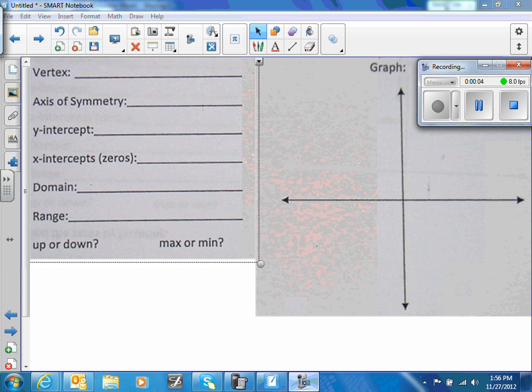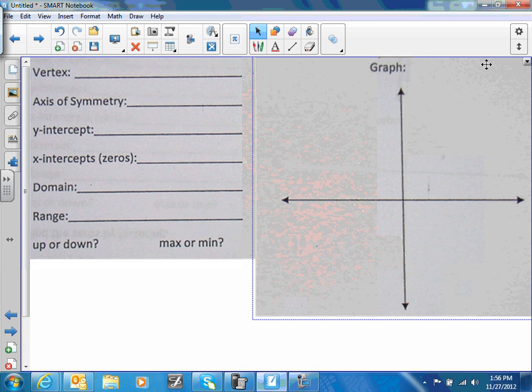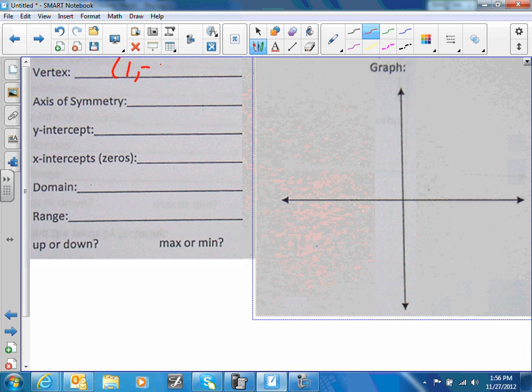The last thing we're going to work on is filling in this information. Remember, your vertex was at (1, -9). Your axis of symmetry is always your x value, so it's x = 1, or whatever this x value is.